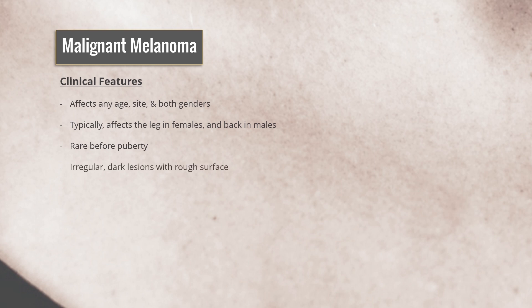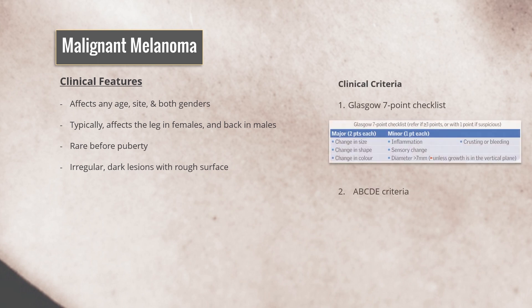Generally, melanomas are irregular, dark lesions with a rough surface. If a lesion is smooth, well-demarcated, and regular, it is unlikely to be a melanoma. But diagnosis can be tricky. The Glasgow 7-Point Checklist and ABCDE Criteria are used clinically for picking up suspicious lesions. Most, but not all, melanomas have features described by these criteria, so if in doubt, refer to experts.